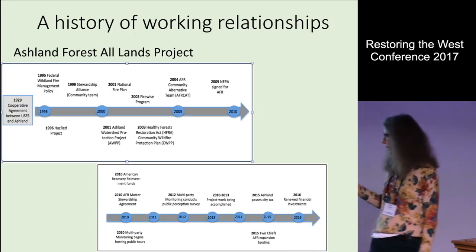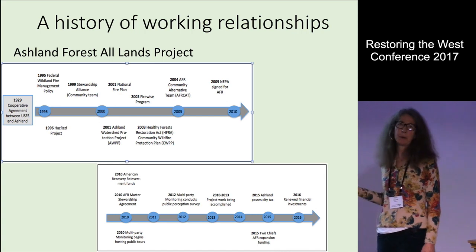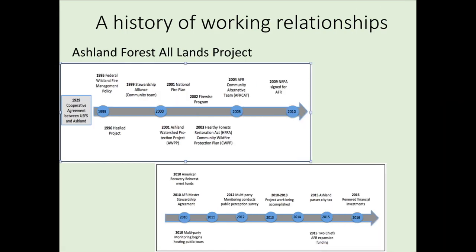A history of working relationships is also key. The Ashland Forest All Lands project has as key partners the Forest Service and the City of Ashland, which gets its water supply from Forest Service lands — they've had a cooperative agreement since 1929. Over the last 20 years, really since 1995, there has been a history of collaborative engagement between a number of partners through various funding sources to address wildfire risk and other forest management needs. It wasn't until 2015 that they got Joint Chiefs funding to expand their All Lands work, but they were building on that 20-year foundation.